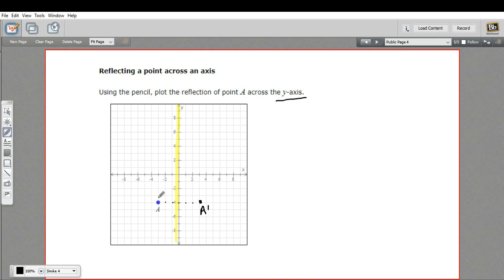If you were going to reflect A across the x-axis, you'd do the same thing. Just put it up there, same distance from the line of reflection. So that's how to reflect a point across an axis.